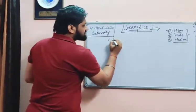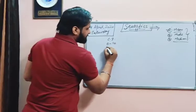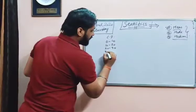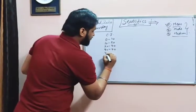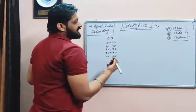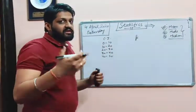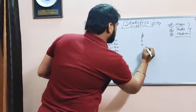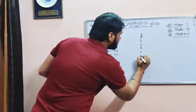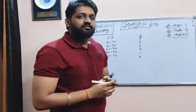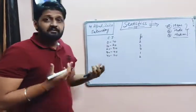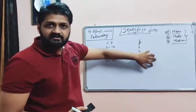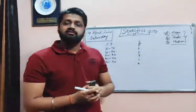For example, the class intervals are 0–10, 10–20, 20–30, 30–40, and 40–50. We are given different frequencies, or observations, which are 2, 2, 3, 1, and 2. These are the various observations. Now we have to find the mean of this given data — these are the intervals and these are the observations — and we have to find the mean.